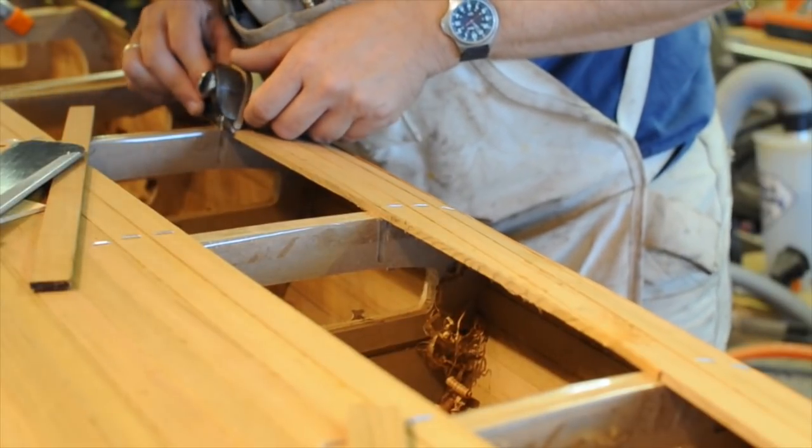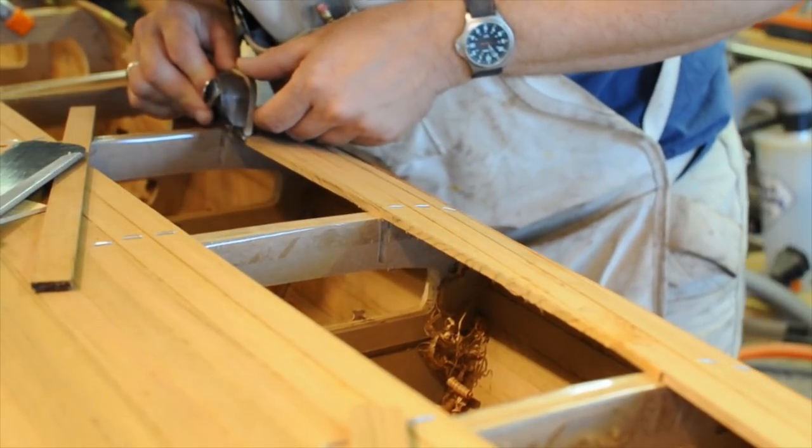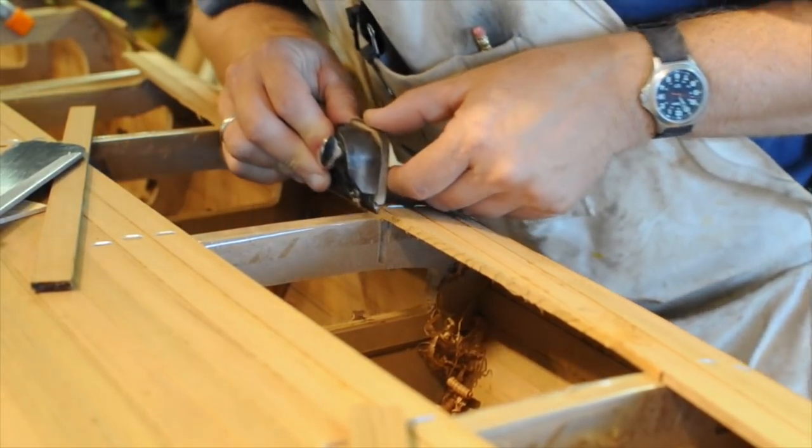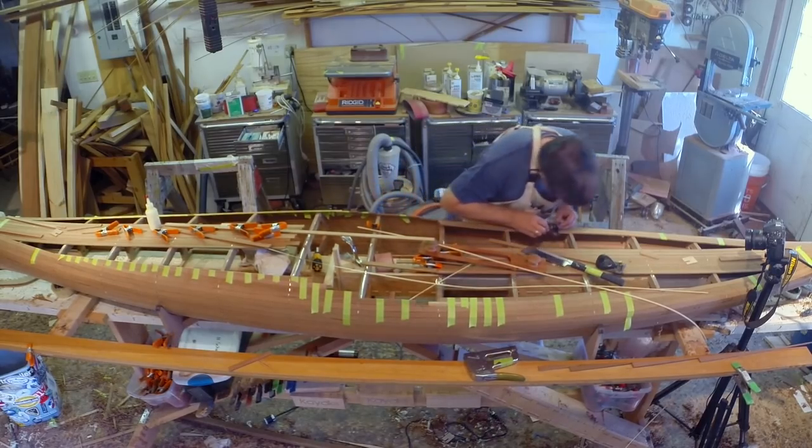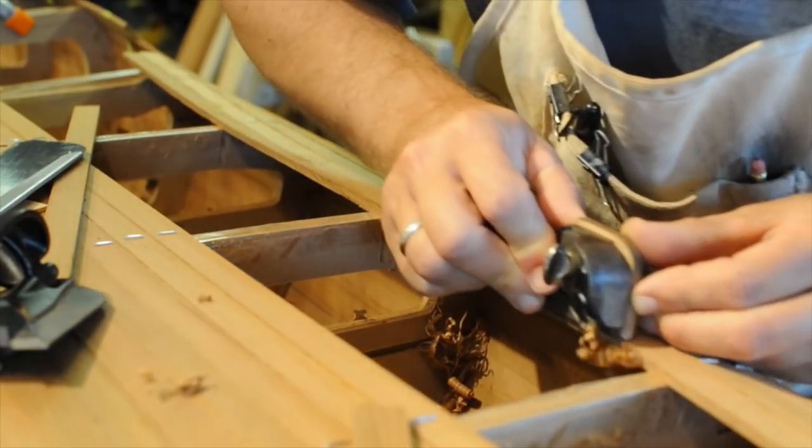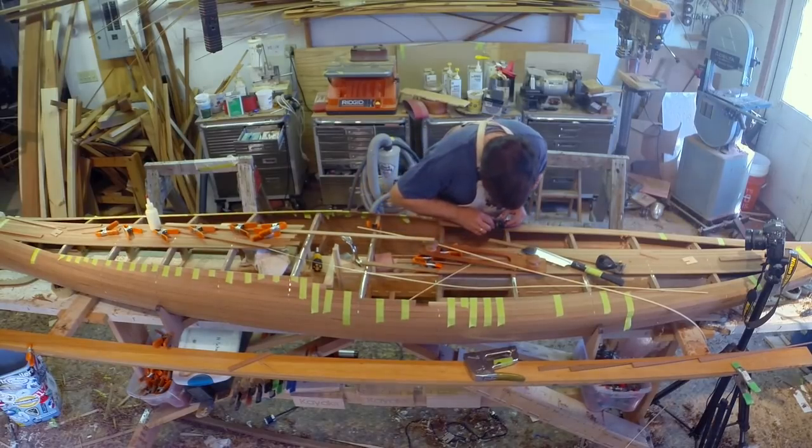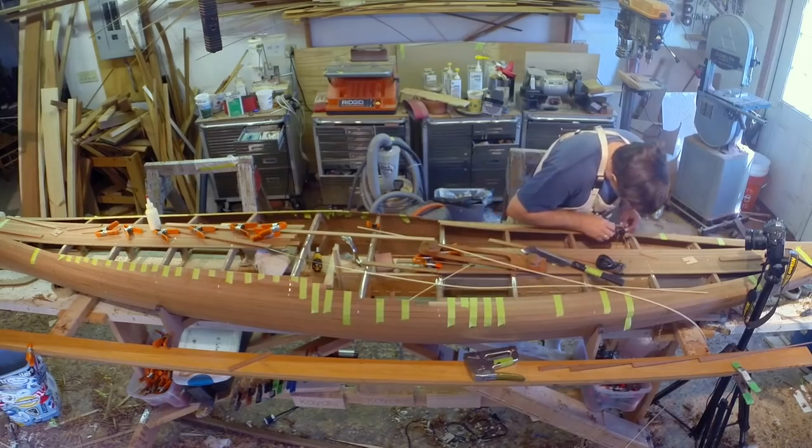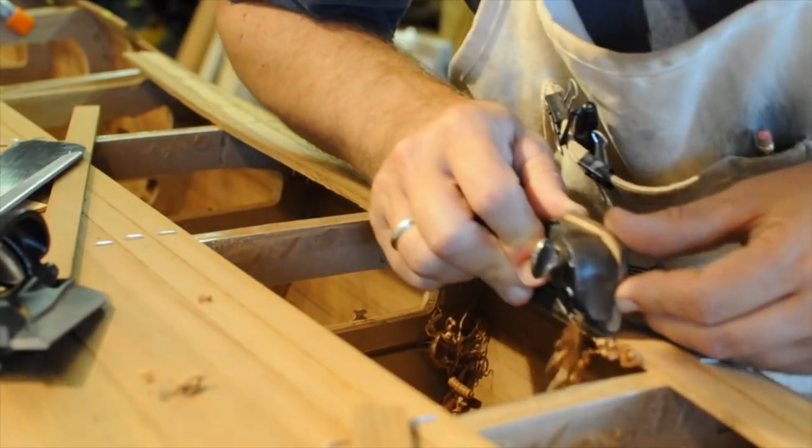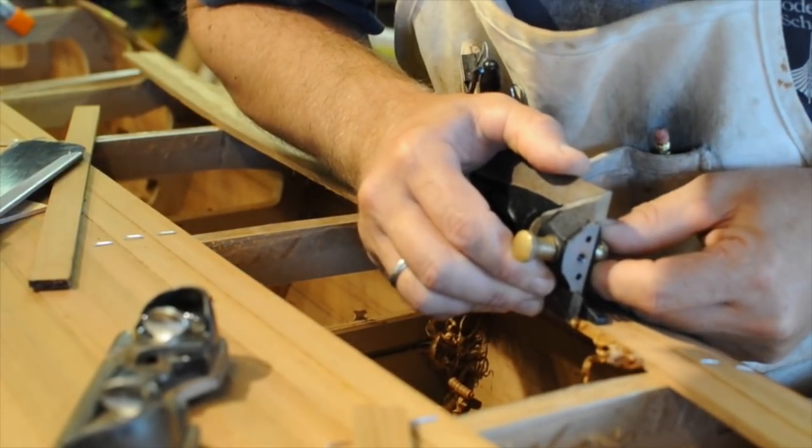Now the sawn edge needs to be cleaned up using a rabbet plane. I will keep checking to assure the edge is getting fair and smooth. I have got several rabbet planes. One can be set up as a bullnose cutting right up to the end of the feature line.